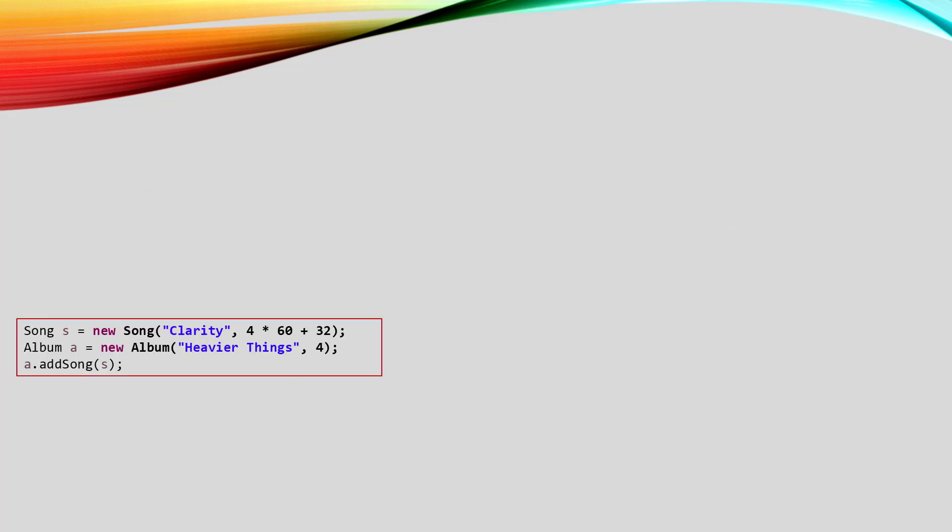So let's watch how our albums and songs will get set up. This is how we create a song object. The constructor has two parameters: the title and the duration of the song in seconds. So this song's name is Clarity and its duration is 4 minutes and 32 seconds, 272 seconds.